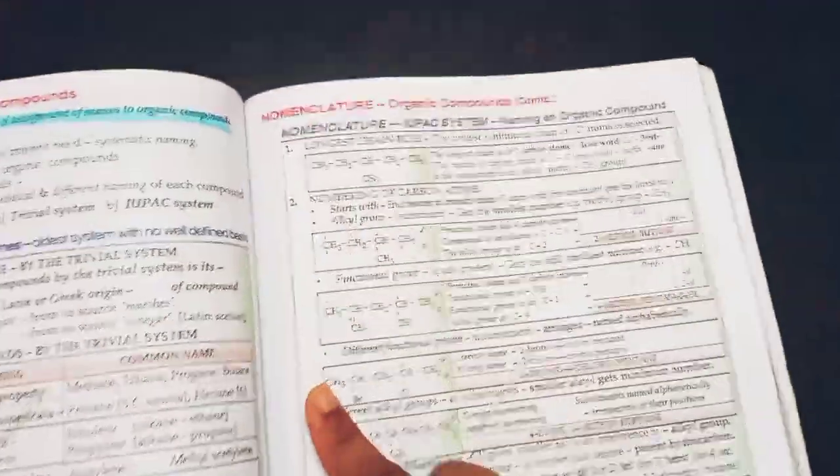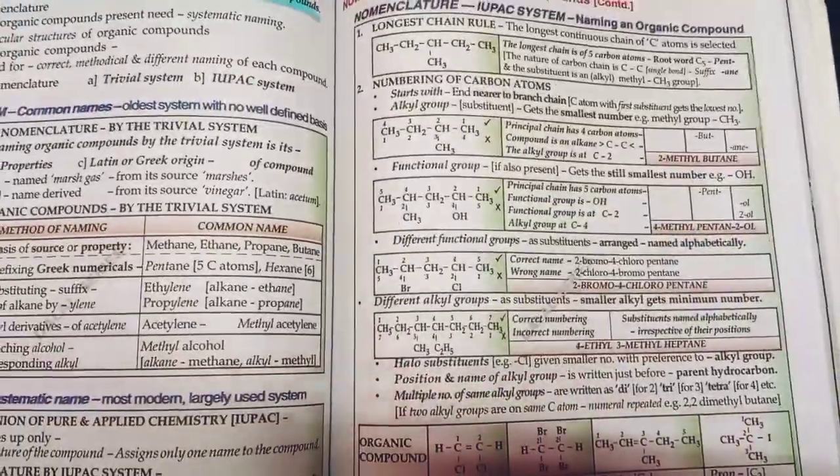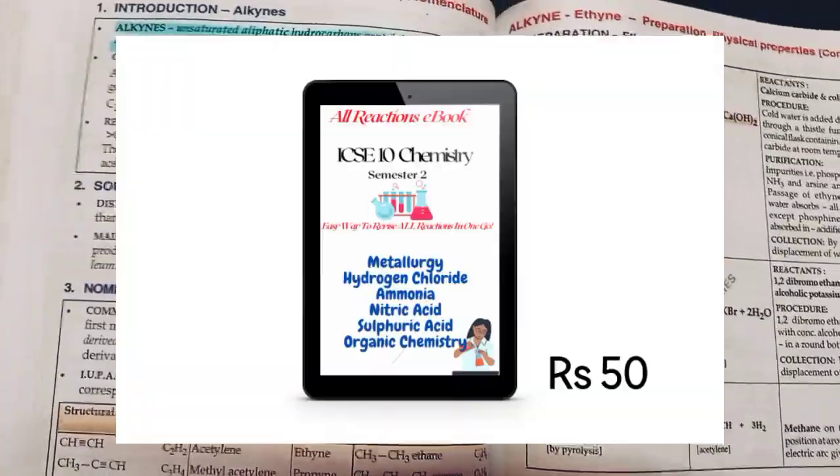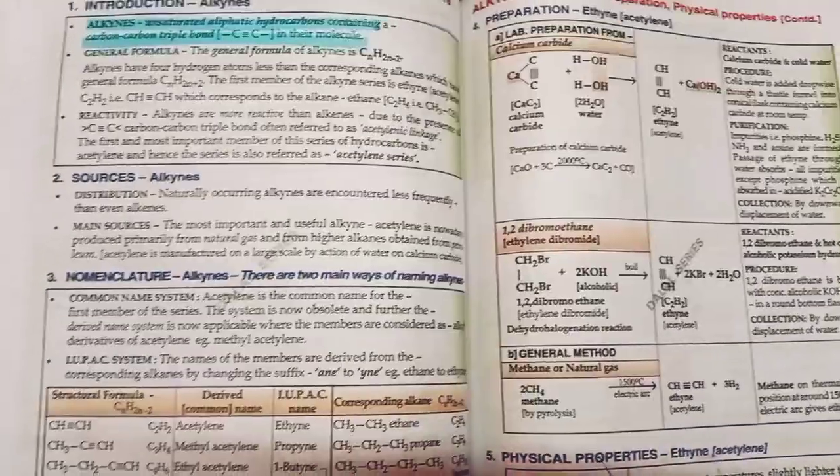Naming of organic compounds and the nomenclature, the IUPAC system is the most important topic in organic chemistry. As I told you, I have chemistry ebook in which I have covered all the reactions. If you want to buy it, link is in the description.